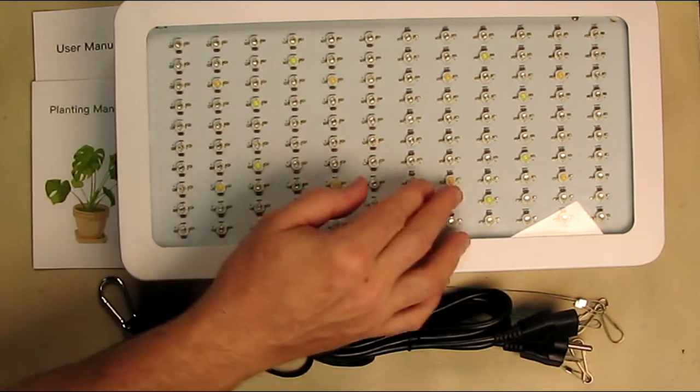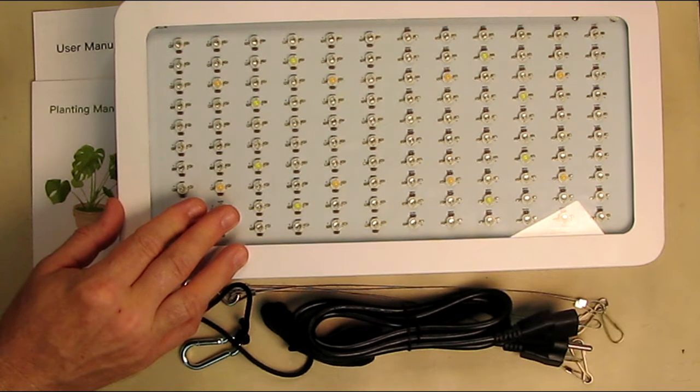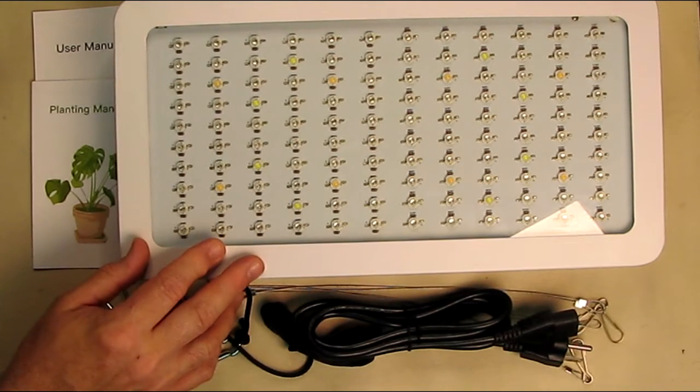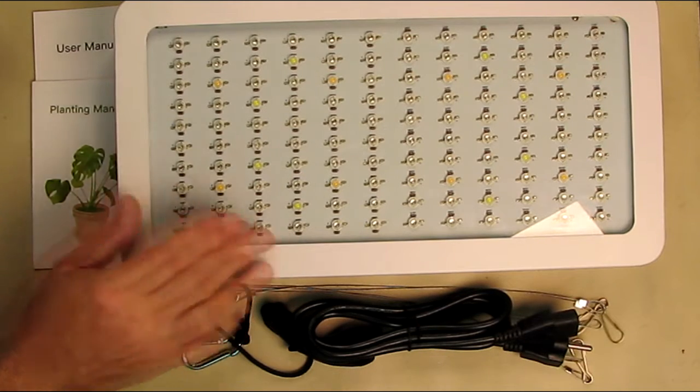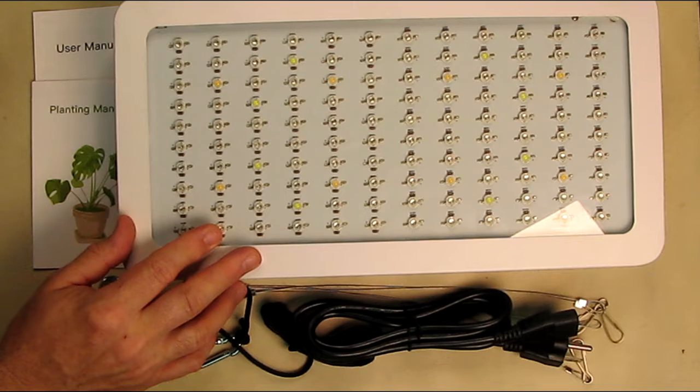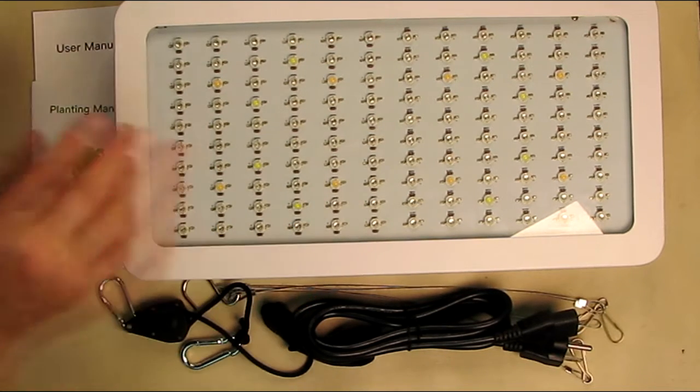So the wavelengths of this are 410 nanometers to 730 nanometers. That's the spectrum, and this will work from AC 86 volts all the way up to 264 volts, so you don't need to convert it for other countries, and it works from minus 20 degrees centigrade to 40 degrees centigrade. The package size is 40 by 21.2 by 6 centimeters, and it weighs 4.5 kilograms.